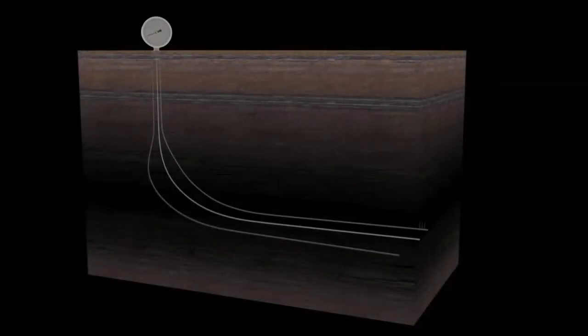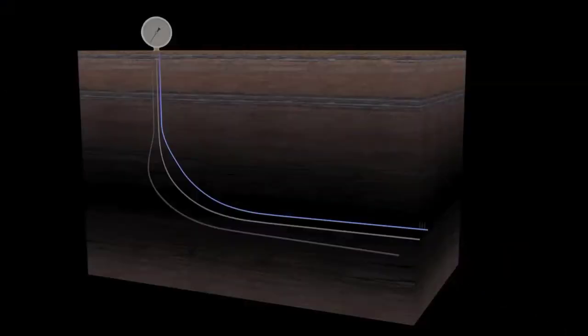An alternative fiber deployment method is described in this section of the animation, whereby a fiber-optic wireline cable is pumped to the bottom of a well, taking advantage of toe perforations. The cable could also be tracked to the bottom of the well.